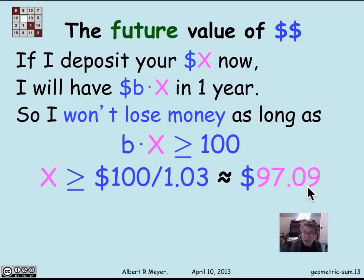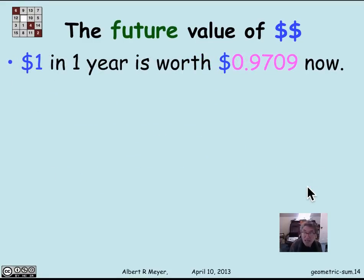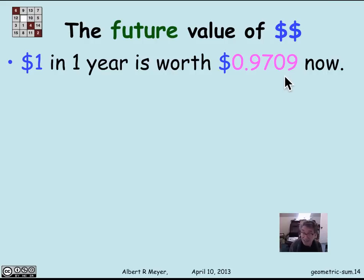That means x is simply 100 over B, which we decided was 1.03, giving $97.09. So $100 in one year is worth $97.09 today, or normalizing to $1.00: $1.00 in one year is worth essentially $0.97 now. Now we can shift perspective and think back a year: how much money was needed last year to be worth $1.00 today?